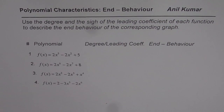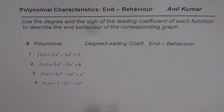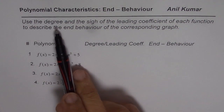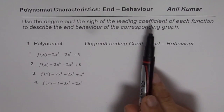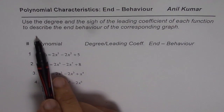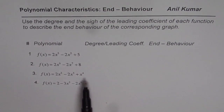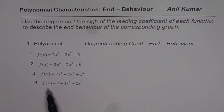I am Anil Kumar and in this video we are going to learn how to find polynomial characteristics from the given equation. I will concentrate on end behavior. The question here is: use the degree and the sign of the leading coefficient of each function to describe the end behavior of the corresponding graph. We are given four polynomials.